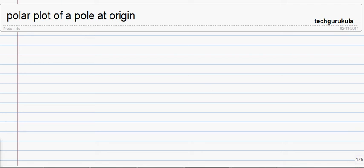In this video, we are going to see the polar plot of a pole at origin. A pole at origin can be written as 1 over s, and it can also be written as 1 over s plus 0.